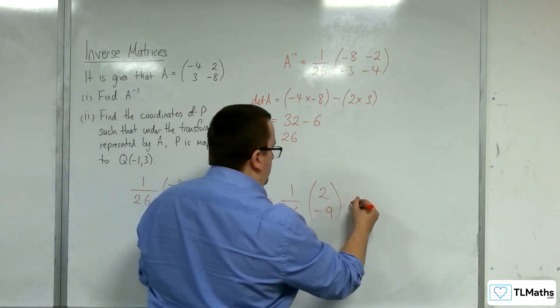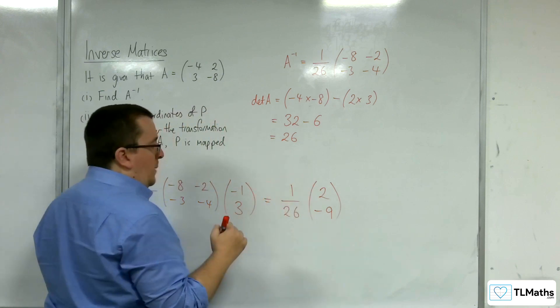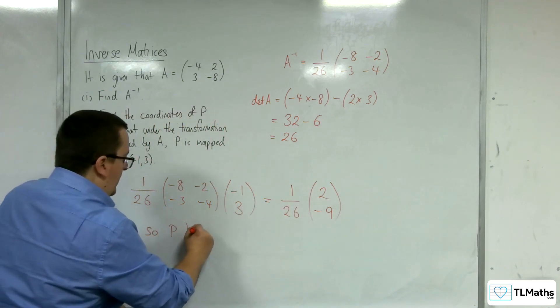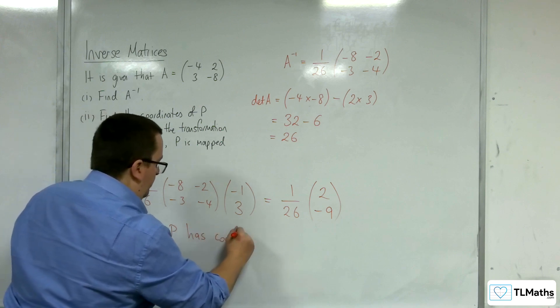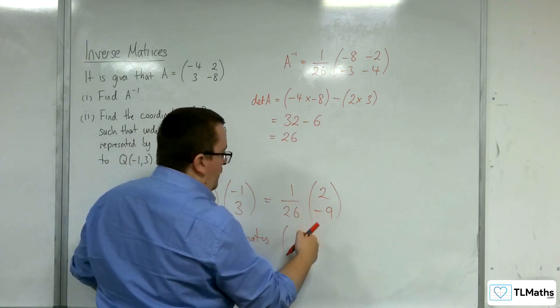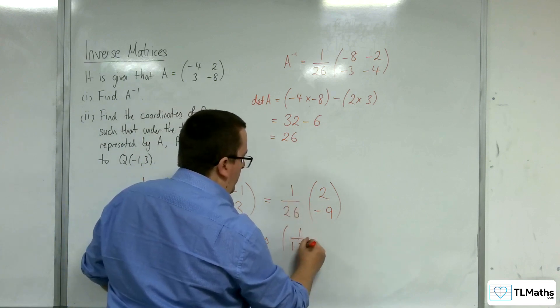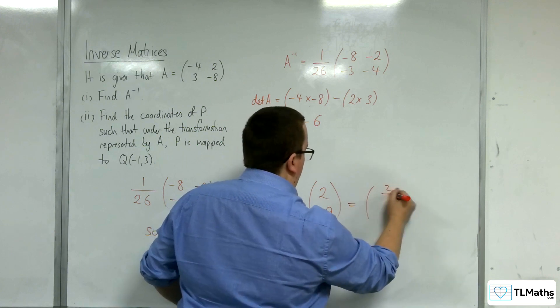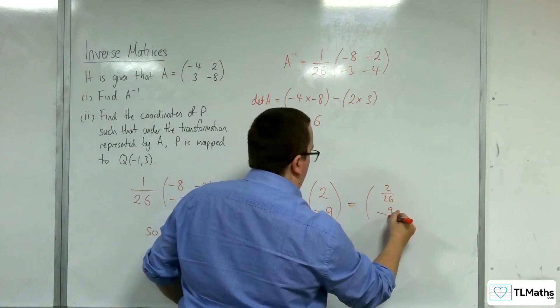And so, if I bring the 1 over 26 in, I can say that P has coordinates at 2 over 26, so 1 over 13. So, I could bring that straight in, so 2 over 26 minus 9 over 26.